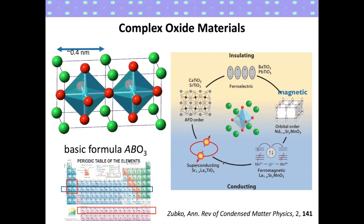The important point is that we can obtain very different physical properties by either changing the transition metal ion in the structure, or the doping at these sites, or even changing the structure by creating very small perturbations to the cubic high-symmetry phase. I'm going to be focusing on the lanthanum strontium manganite material, where we have manganese as the transition metal ion.